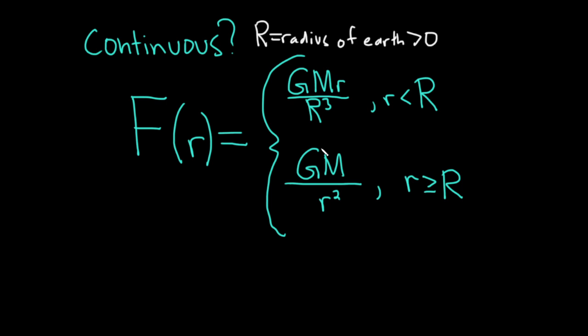So let's first look at each piece. This top piece here is a function of little r. This top piece is going to be continuous because there's no funny stuff going on. G, M, and big R here are all constants. Little r is the only variable here. And there's no problems. There's no division by zero, no square roots, no logarithms. This is a nice, clean, continuous function.